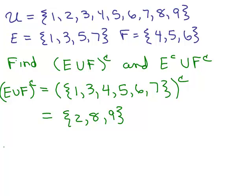Let's do the second part. How about E complement union F complement? This is not the same problem. There's no parentheses. So first I have to do E complement and I have to do F complement and then I need to take their union. So let's do that. First we've got to take E complement. So we look up here at E. We want everything in the universal set except 1, 3, 5, and 7. So that's this set: 2, 4, 6, 8, and 9.